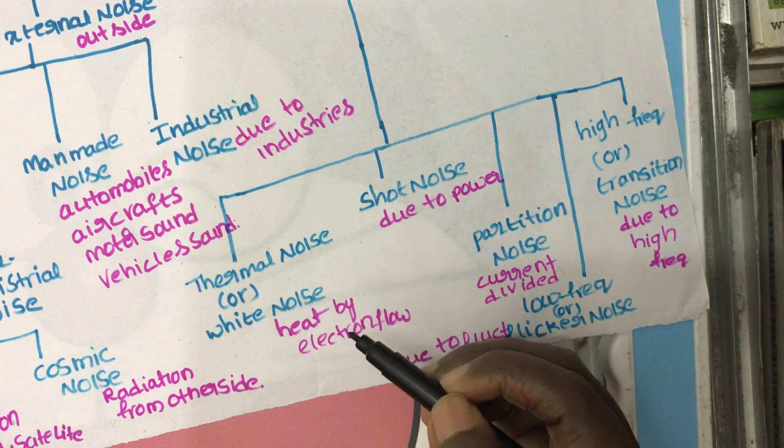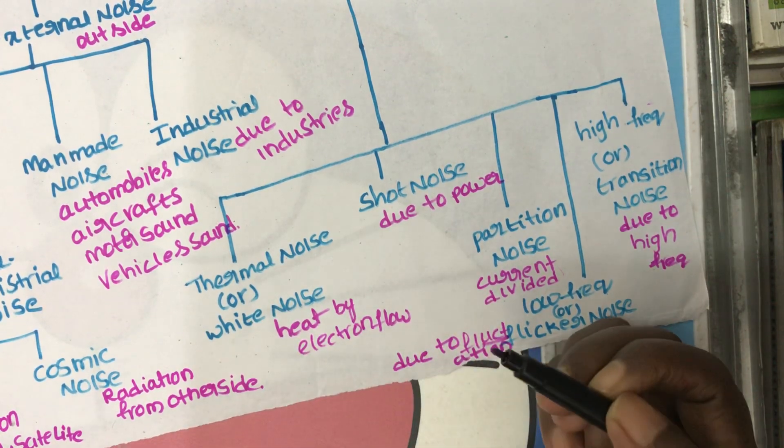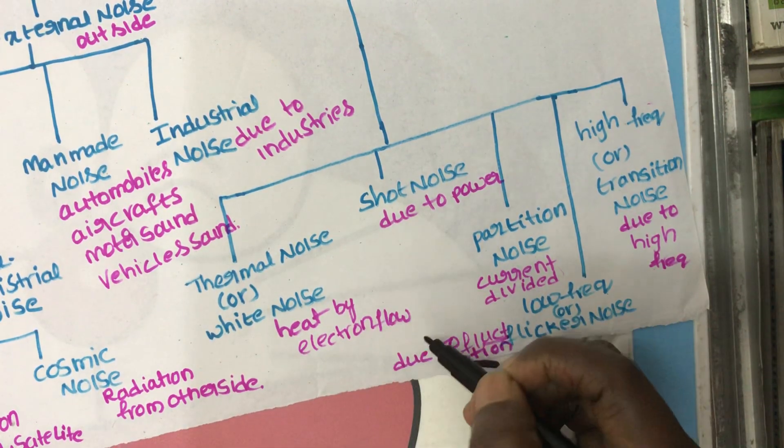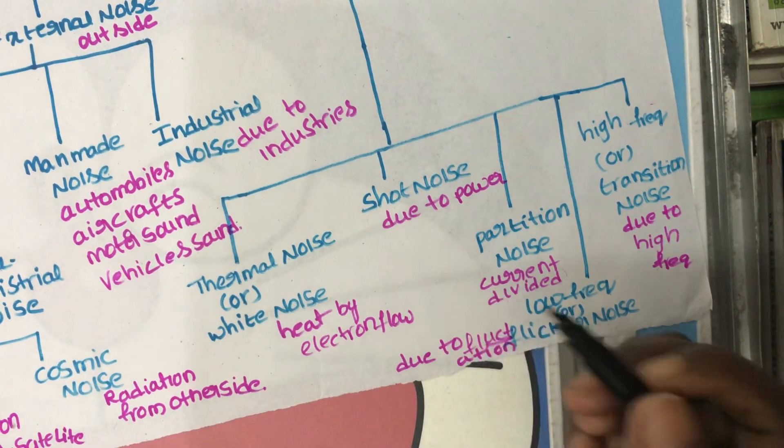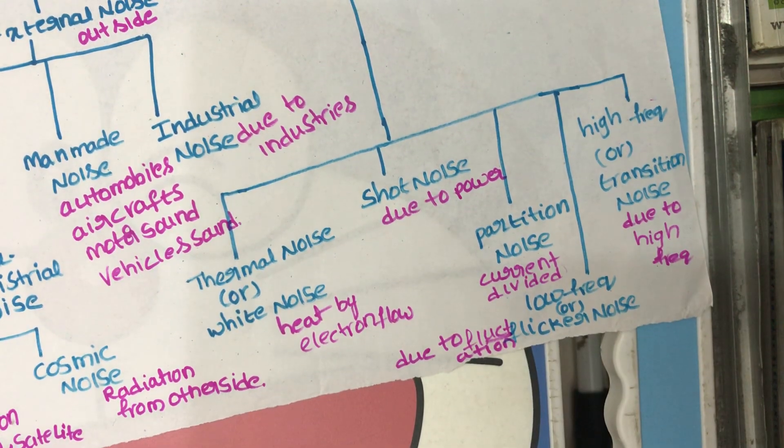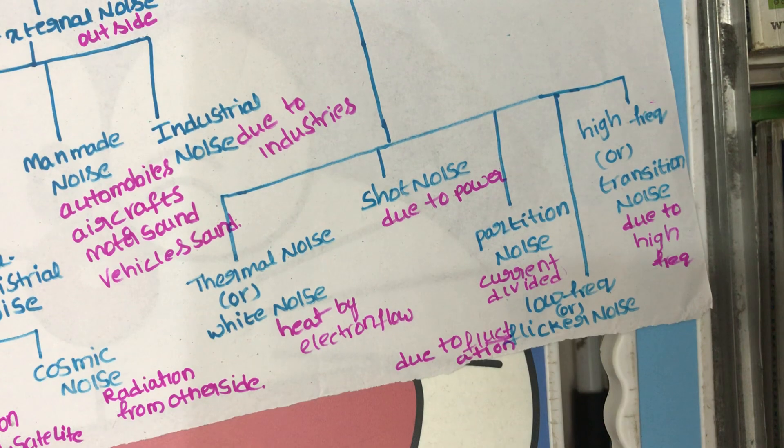Thermal noise or white noise is due to heat produced by electron flow. It arises due to random motion of charge carriers.